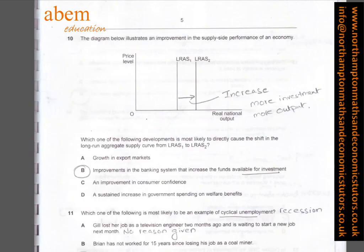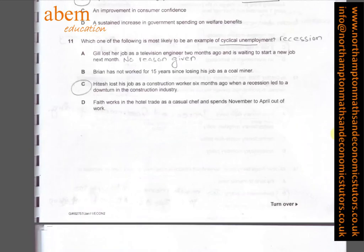In question ten, there is a shift of the LRAS curve outward, indicating an increase — more investment, more output. Hence B is the answer: improvements in the banking system that increase the funds available for investment.